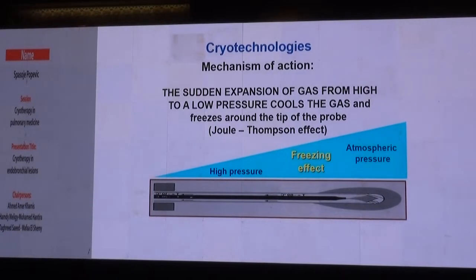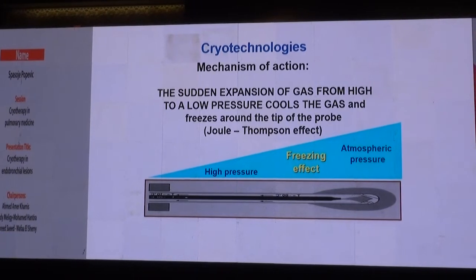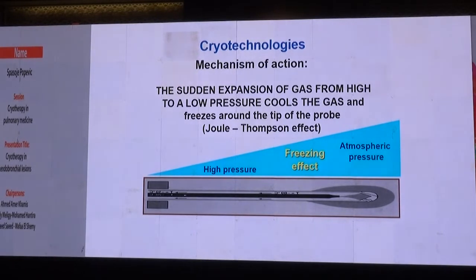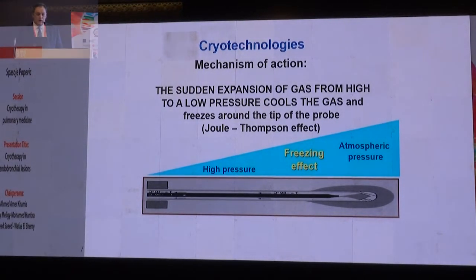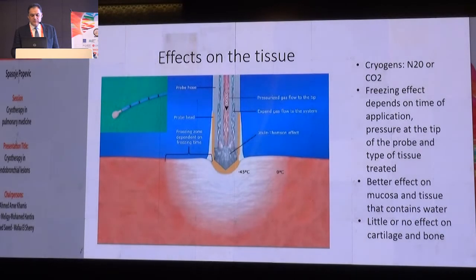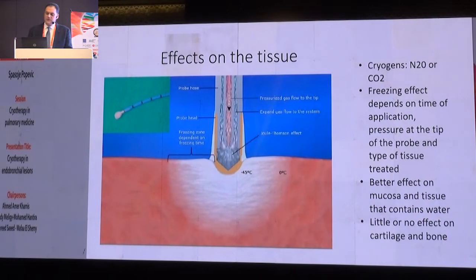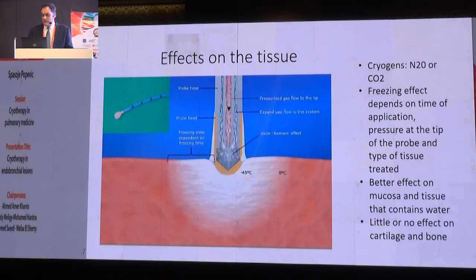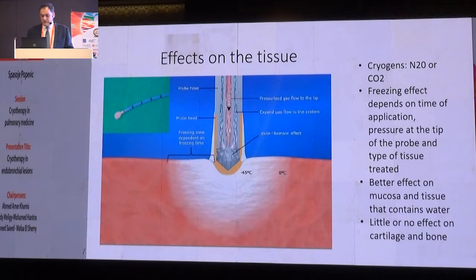We all know how things work — we use the Joule-Thompson effect of cooling the gas at the tip of the probe. The effect on tissue depends on time of application, pressure at the tip of the probe, and the type of tissue we treat. The effect of cryotherapy is better on mucosa and tissue that contains water than on cartilage and bone.